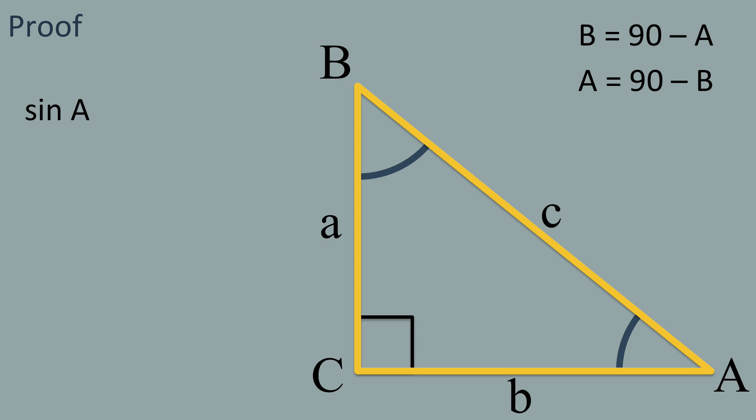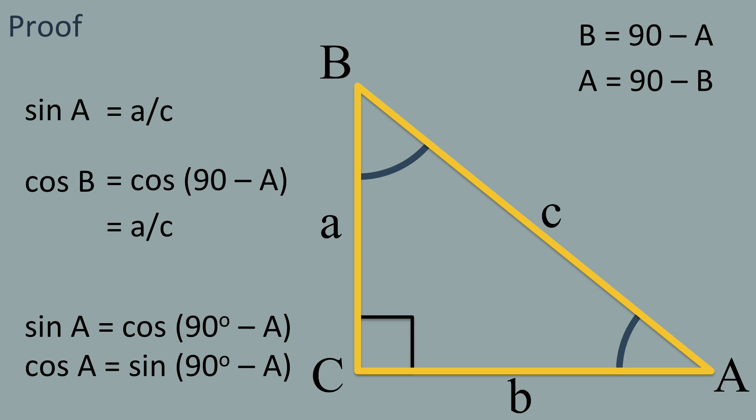If we look at the sine of angle a, sine is the opposite side divided by the hypotenuse, a over c. If we want to find the cosine of the complementary angle B, we can use our knowledge of complementary angles to write 90 minus angle a in place of angle B, which is cosine 90 minus a. Cosine is adjacent side divided by hypotenuse, a over c. Therefore, sine of a equals cosine of 90 minus a.